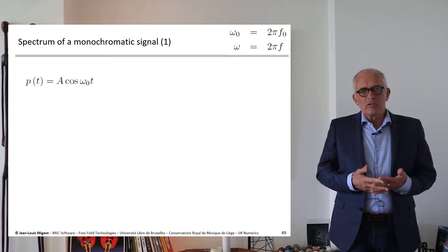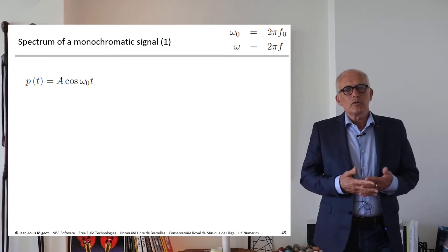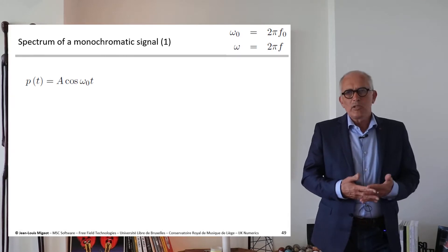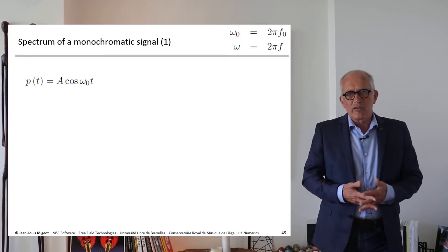Consider the simplest possible signal. The pressure, the time signal of the pressure is just an amplitude A multiplied by cosine omega zero T.